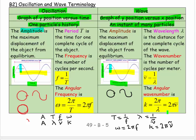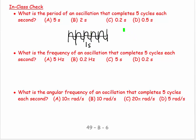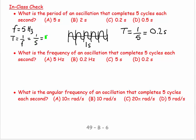Let's look at some mathematics. What is the period of an oscillation that completes five cycles each second? Conceptually: one, two, three, four, five cycles in one second divided into five equal parts gives period = one second divided by five = 0.2 seconds. Alternatively, using math: five cycles each second means frequency equals five hertz, so period equals one over frequency equals one over five equals 0.2 seconds.